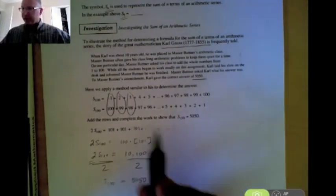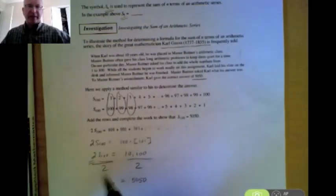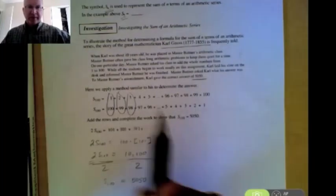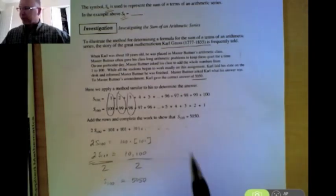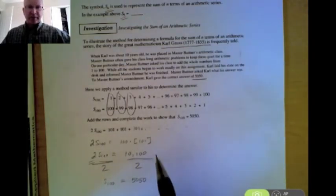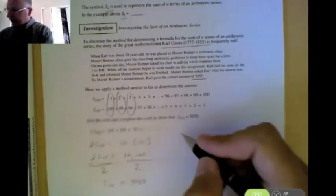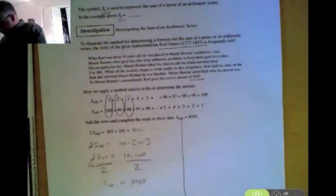Now as Carl realized and most mathematicians realize they don't want to have to do this process for every single set of numbers they might actually have. So then they started working on coming up with a formula for trying to derive the sum of a set of numbers. And how the formula worked is as follows.